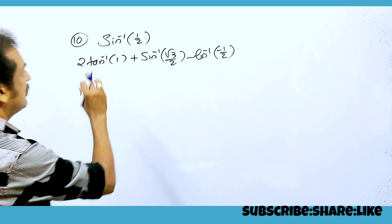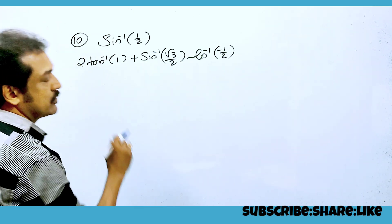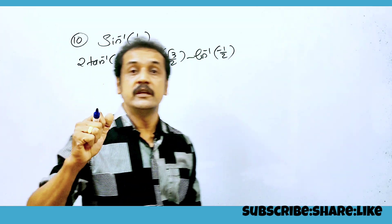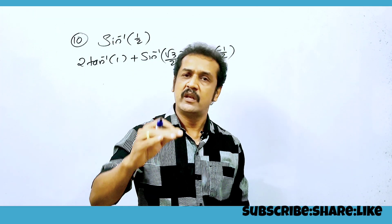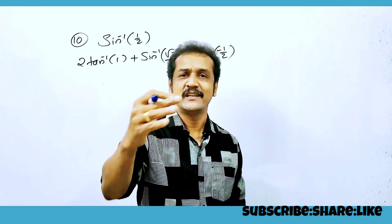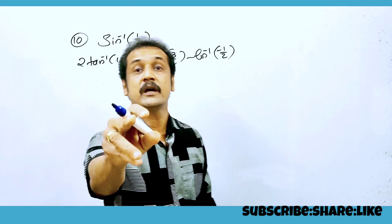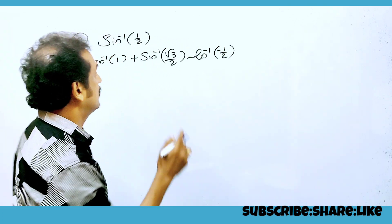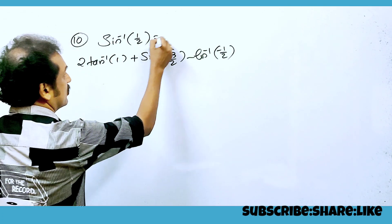sin⁻¹(1/2) is equal to π/6. If you write sin⁻¹(1/2), it's π/6. The answer is π/6.